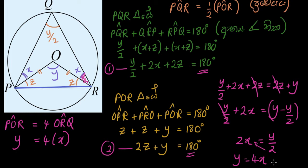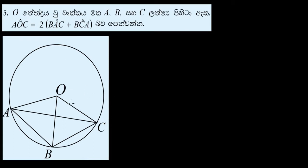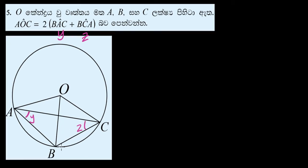In other words, we have the same y. ORQ. So if you want to use the pen, you can use the pen for AOC and BAC. You can use the pen for Y and Z. If you want to use the pen for Y, you can use the pen for Z.